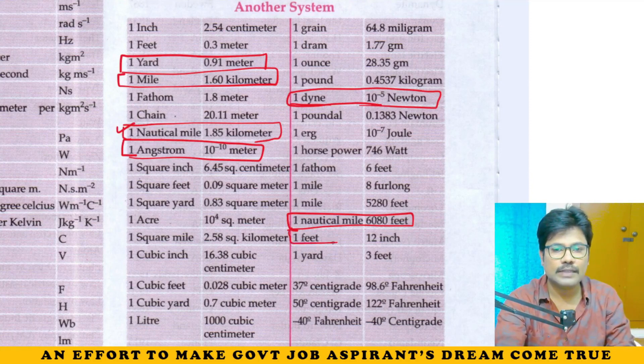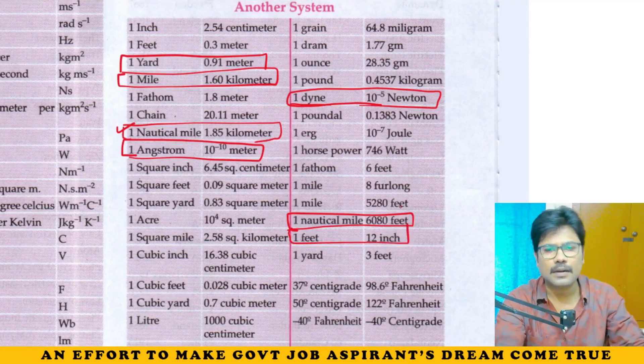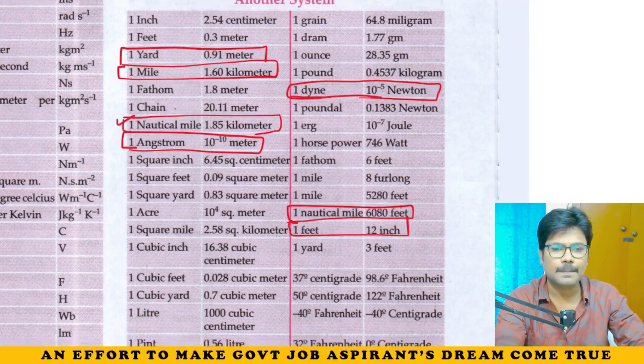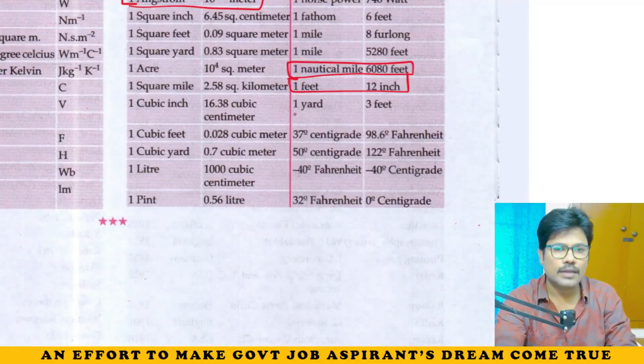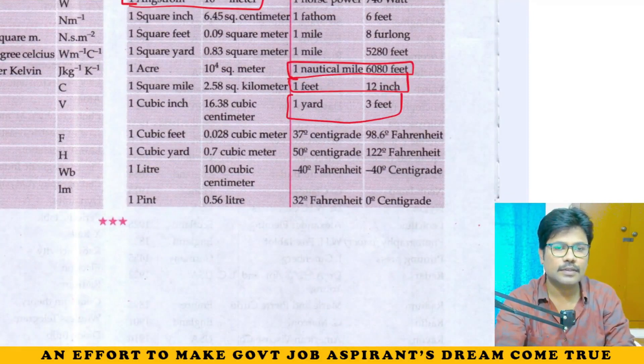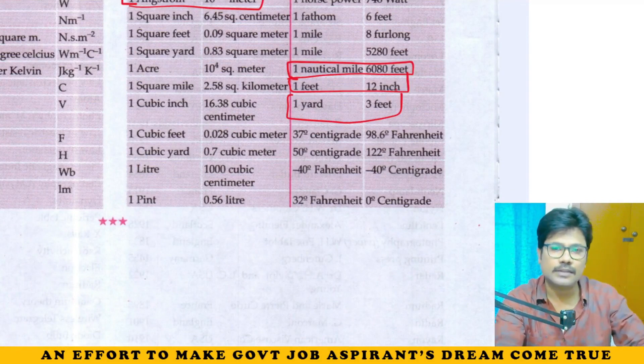One foot is equal to 12 inches — that is the basic building block, normally how we count levels. One yard is equal to 3 feet. If you want to use the area, you can do it.